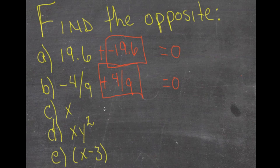The opposite of x would be negative x, because x minus x is 0. The opposite of xy squared, negative xy squared.